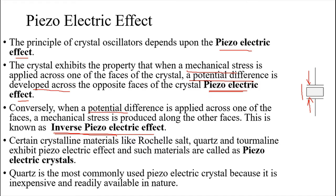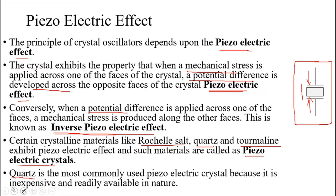From this resonant frequency we can construct an oscillator. To produce a crystal oscillator, you can use three main elements: Rochelle salt, quartz, and tourmaline. These three elements naturally exhibit the piezoelectric effect, so they are called piezoelectric crystals. Out of these, quartz is the most widely used because it is easily available and very inexpensive.